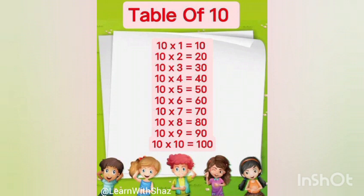10 ones are 10. 10 twos are 20. 10 threes are 30. 10 fours are 40. 10 fives are 50. 10 sixes are 60. 10 sevens are 70. 10 eights are 80. 10 nines are 90. 10 tens are 100.